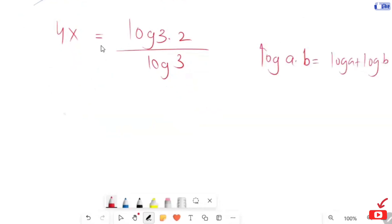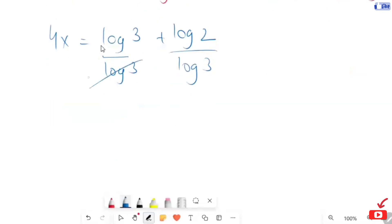So, this will turn to 4x equals to log of 3 plus log of 2 over log of 3. Now, this log of 3 divided by log of 3 equals 1. So, this and this get cancelled. So, 4x equals to 1 plus log of 2 over log of 3.